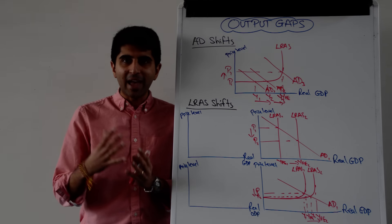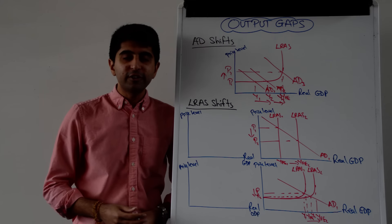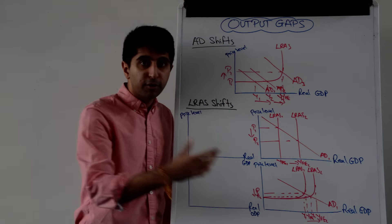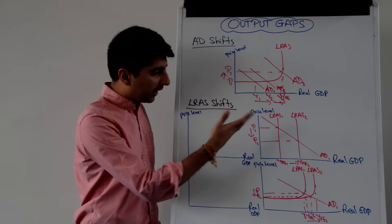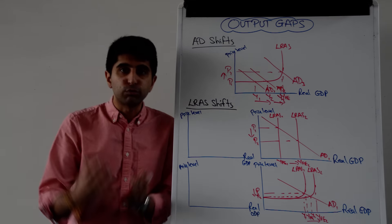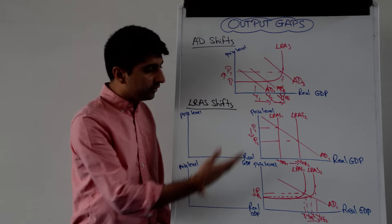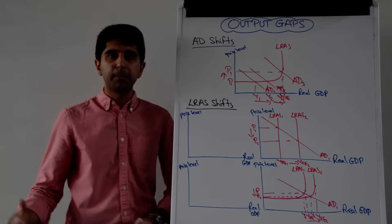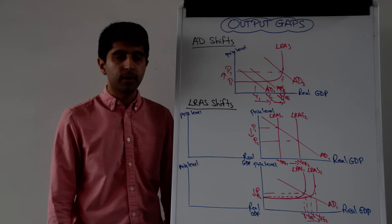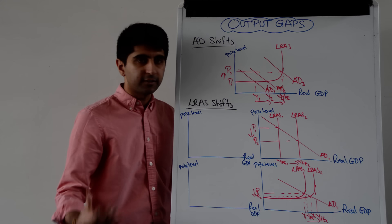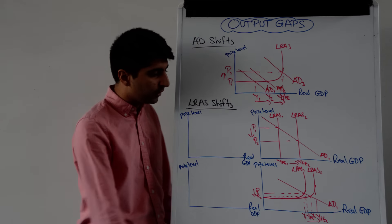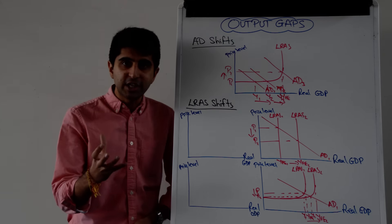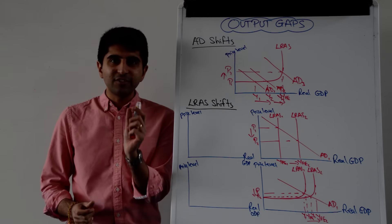Let's do the same thing for LRAS. When LRAS shifts to the right, we say there'll be an increase in both actual and potential growth, a fall in unemployment, the natural rate of unemployment will decrease, cost-push inflationary pressure will decrease, and exports become more competitive so the trade position may improve too. These are the conclusions we generally make whether you use the classical or Keynesian model. But that doesn't have to be the case.